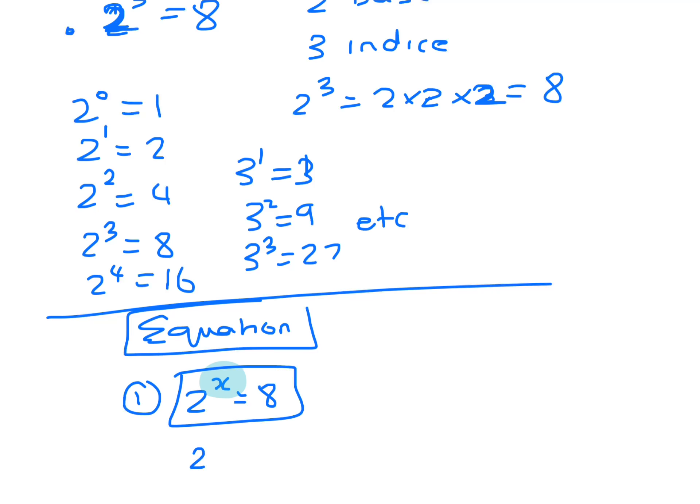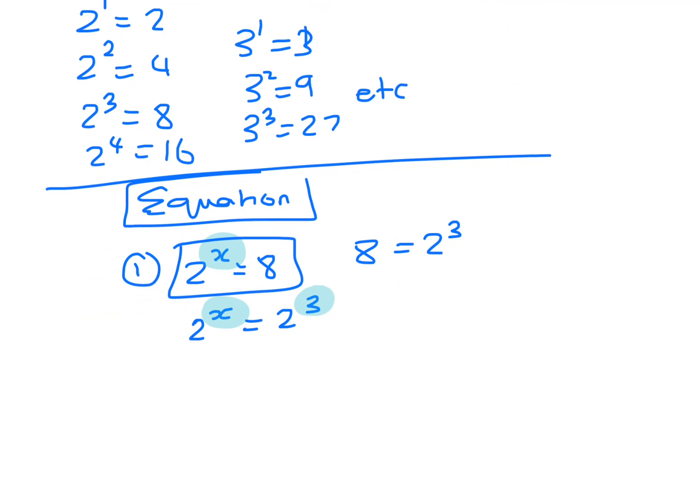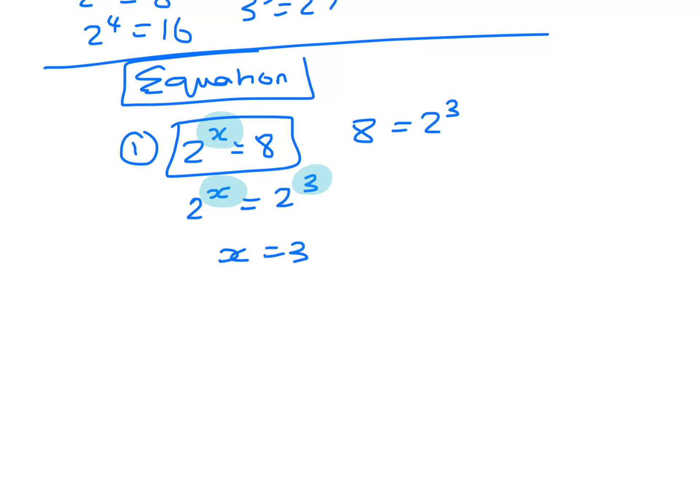Now this is quite a simple one, but what I want you to get used to is if you've got 2 to the x, if you can get the 8 and you can write it as index form like 2 to the 3, then all that you need to do is just equate the indices. So that means that x would equal 3.